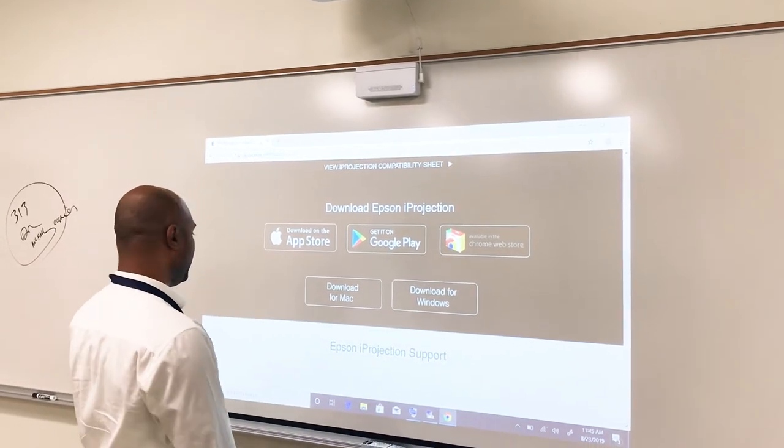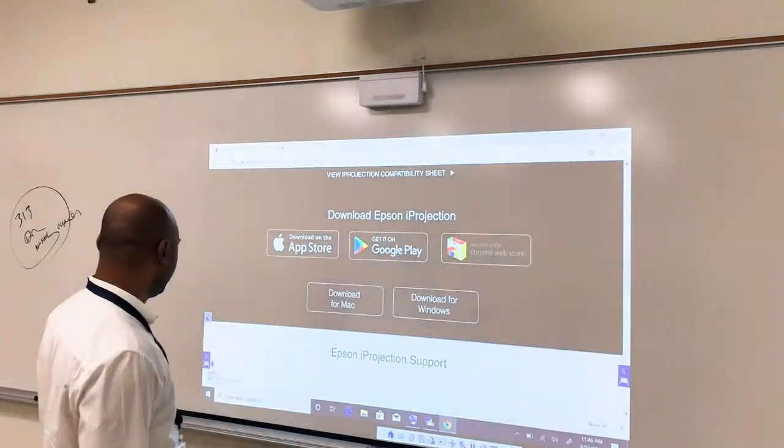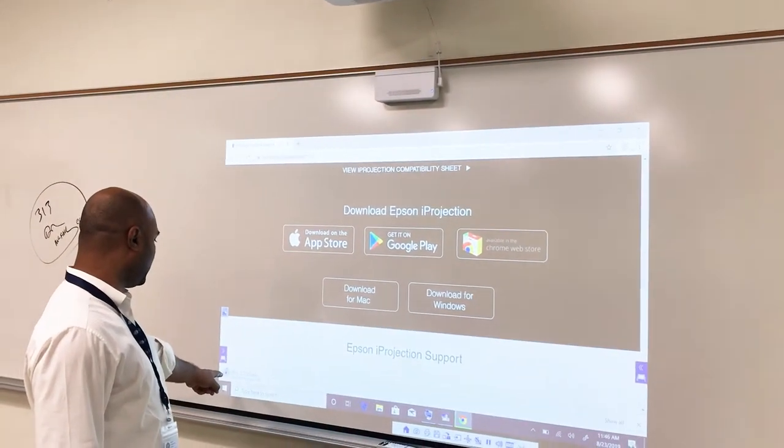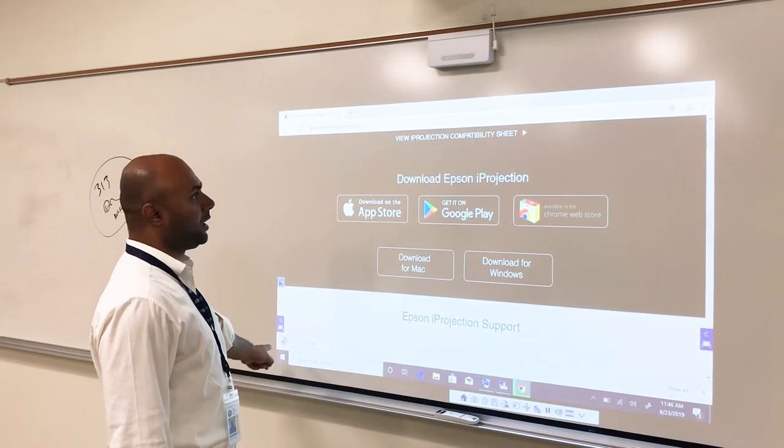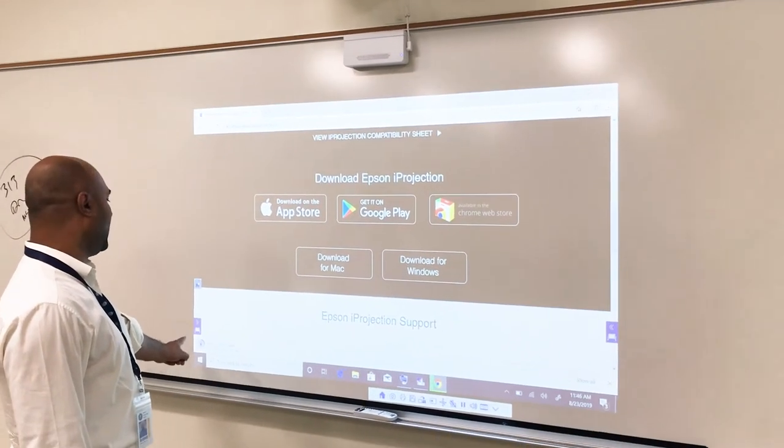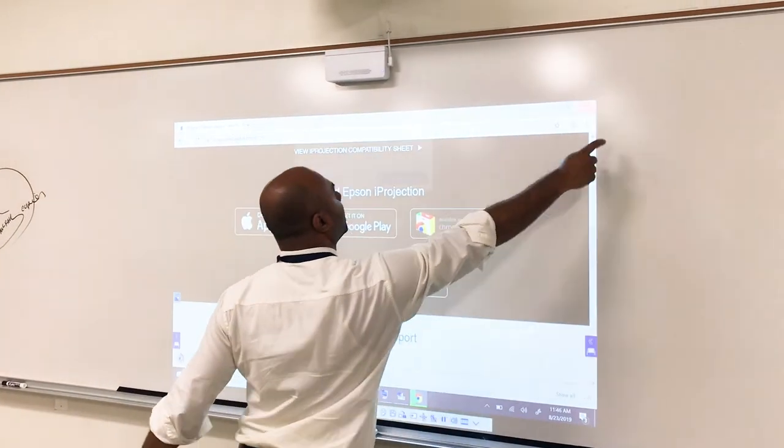So if you're using Windows, for example, at the moment I'm using Windows simply tap there and you should be able to see that this will download the software. You would need a permission to install this software. So in that case, you would have to contact us and we can install that and then all the functions will be there.